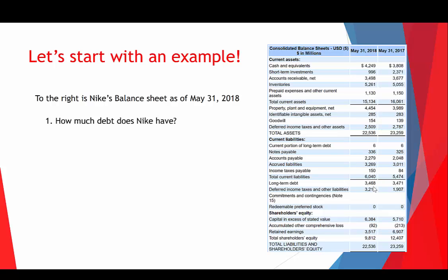They barely have enough cash to cover that debt, so at first glance that would make you nervous. But we're going to take a second glance and compare that debt amount to the total value of Nike's assets. If you look through this balance sheet you'll see right above current liabilities it says total assets in all caps, and that puts us at 22.5 billion dollars in total assets.